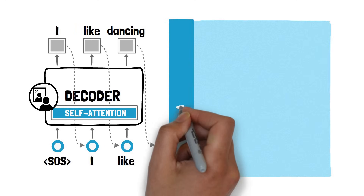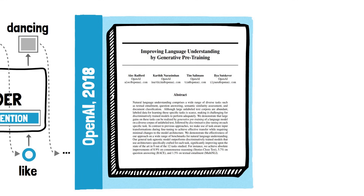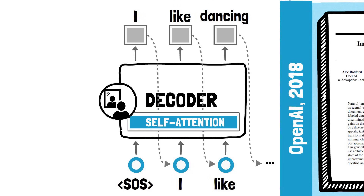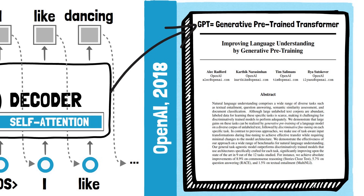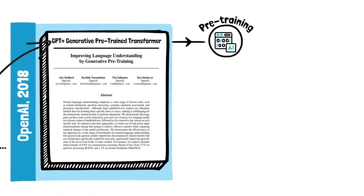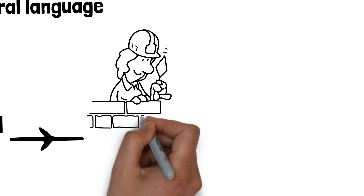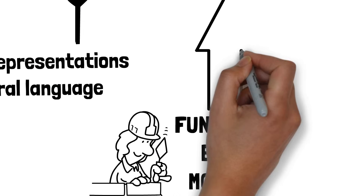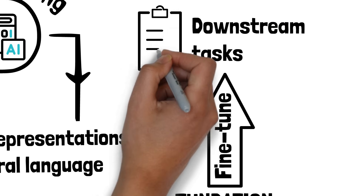In 2018, OpenAI published a paper titled 'Improving Language Understanding by Generative Pre-Training.' In this paper they showed how the decoder could be used to create a powerful language model they called GPT, for Generative Pre-trained Transformers. Similarly to what Google did with BERT, the idea is to have a pre-training phase where the model learns representations of language from large amounts of unlabeled data. The resulting base or foundation model can then be fine-tuned for specific downstream tasks without requiring large task-specific datasets.